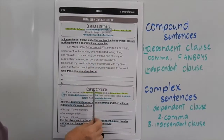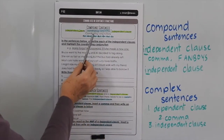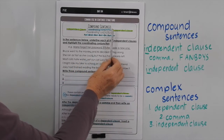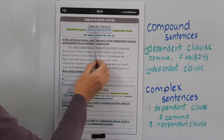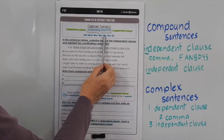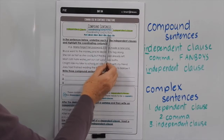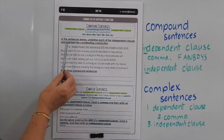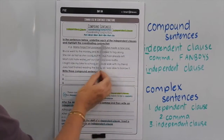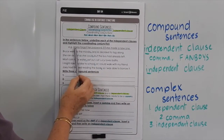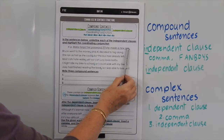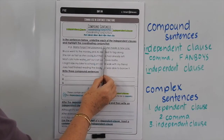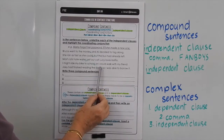Today we're looking at compound sentences and complex sentences, and we're looking at the use of the comma within a compound sentence. In a compound sentence you have an independent clause, then a coordinating conjunction, and then another independent clause. The coordinating conjunctions you can use are: for, and, nor, but, or, yet, so. If you take the first letter of each of those words, it becomes the word 'FANBOYS' — so that might help you remember those coordinating conjunctions. In the sentences below, underline each of the independent clauses and highlight the coordinating conjunction. After the first independent clause and before the coordinating conjunction, we put a comma in.